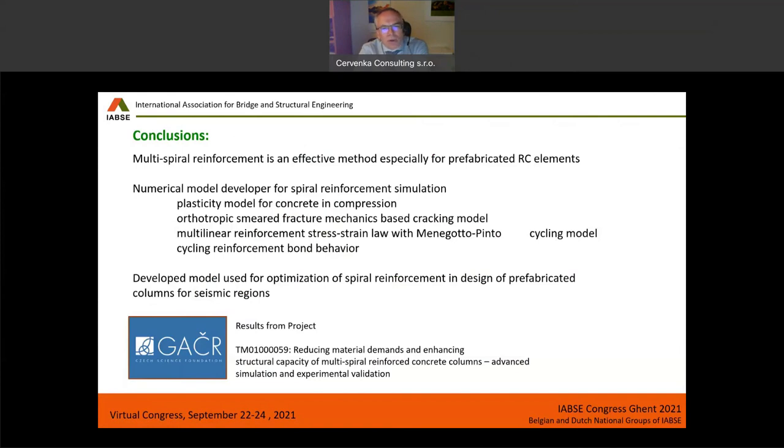And the model that we developed is using plasticity for concrete in compression, orthotropic smear crack model for cracking using the crack band model, multilinear reinforcement stress-strain law with the Menegotto-Pinto cyclic model. And important is also that we take into account the cyclic behavior of reinforcement bond. So the developed model is used for the optimization of the design of this spiral reinforcement for prefabricated columns, mainly for seismic regions.